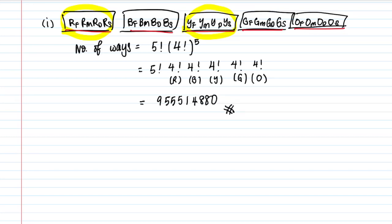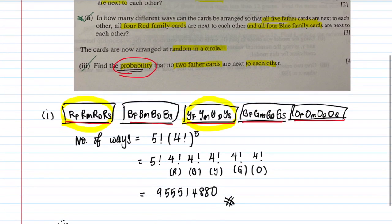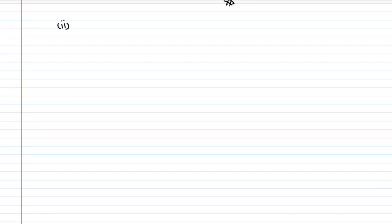Part two: the question is asking how many ways when all five fathers have to be next to each other, the red family together, and the blue family together. Let's draw this out. The red family members — red mother, red daughter, red son — are together, and the red father is with all the other fathers. The blue family similarly must be kept together, with the blue father adjacent to the group of fathers.